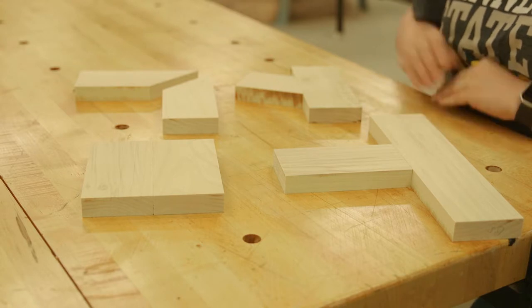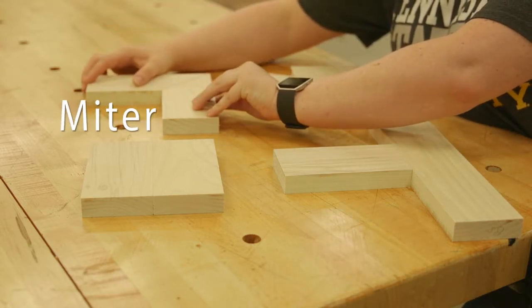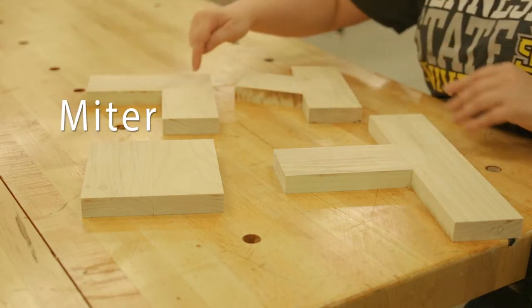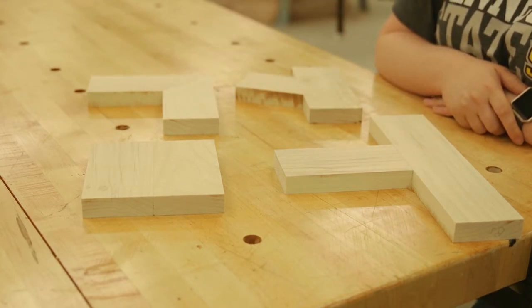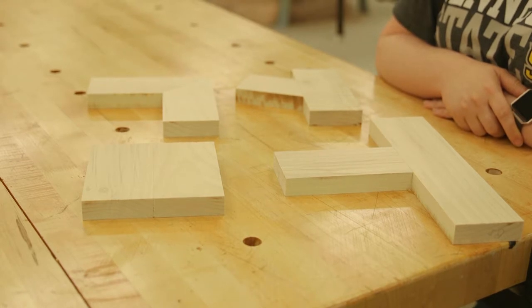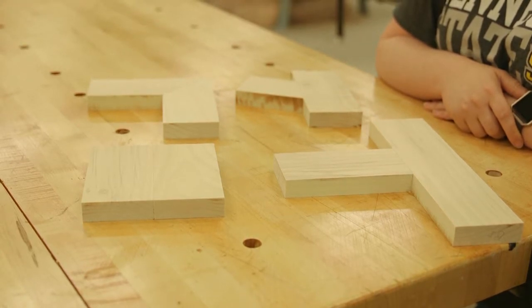The miter butt joint joins end grain to end grain. Even though most miter joints are indeed butt joints, the miter joint is considered a joint type of its own. There is a separate video that focuses on the miter joint.